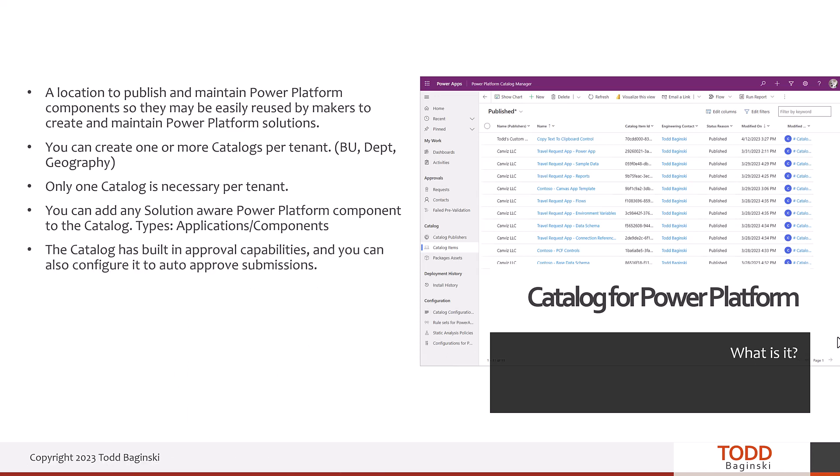The catalog has built-in approval capabilities, and you can configure it to auto-approve submissions. This means you have a gate on your catalog where, for a certain person or publisher, you can give auto-approval — you trust what they put into the catalog automatically. For other publishers who don't fall into that category, an approval cycle is needed to make their submissions available. Governance is built right in.